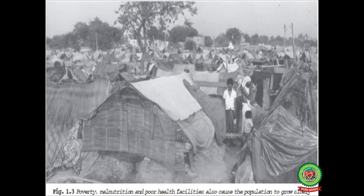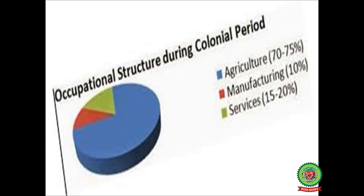At the time of British rule, the industrial sector was also not developed. The handicraft industry was also decaying during the colonial rule due to the discriminatory tariff policy — finished goods from Britain were low-priced while Indian products were of higher prices, creating lesser demand. Handicraft industries like doll making, basket making, and designing were affected. Due to the decaying of the handicraft industry, most of the population became dependent on the agriculture sector.